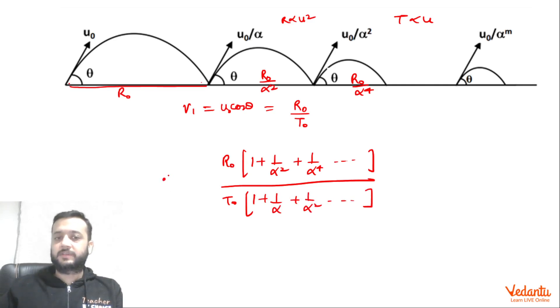This was given as 0.8v₁. So R₀/T₀ this is v₁. So we can say that this ratio of these two GPs is 0.8. Now it's pretty easy. The first infinite GP has a common ratio of 1/α². So we can write that a/(1-r) divided by this has a common ratio of 1/α. So a/(1-r).